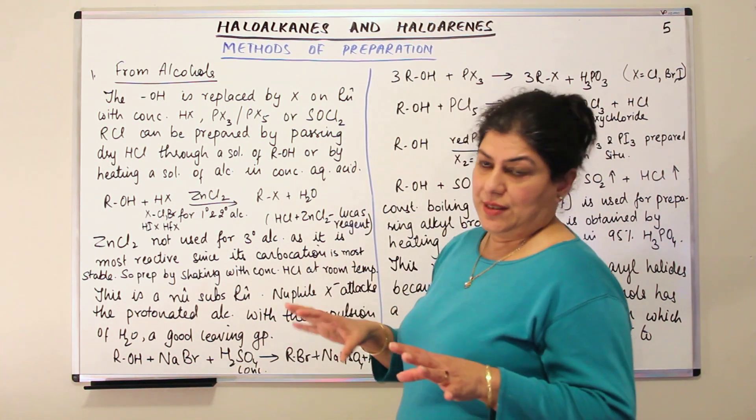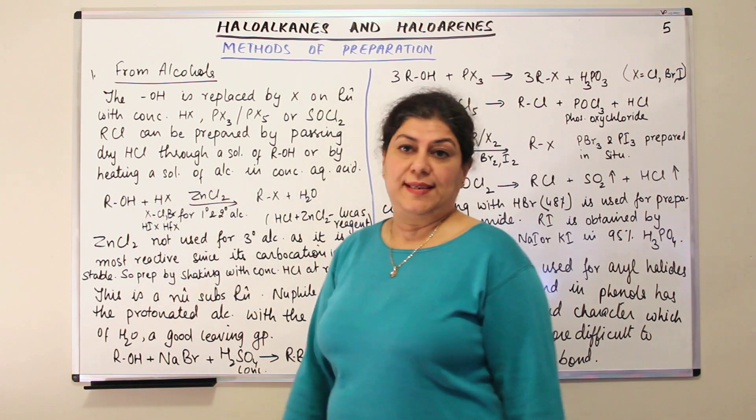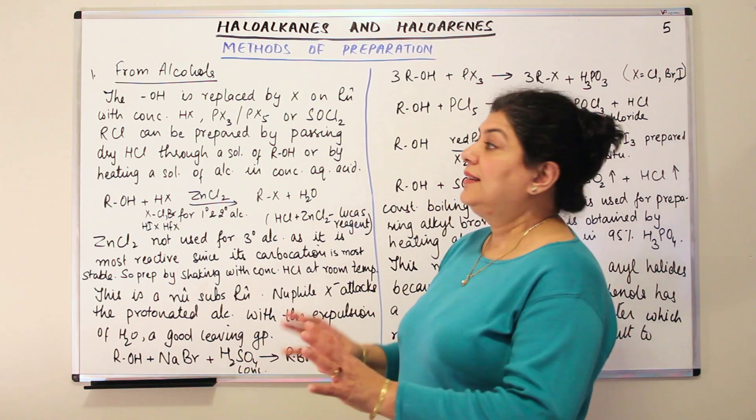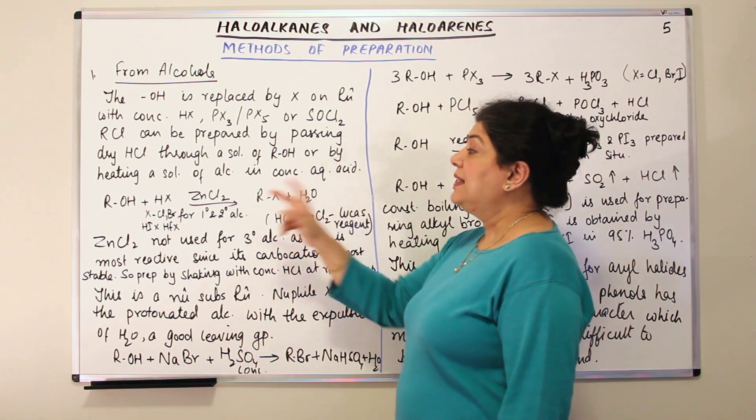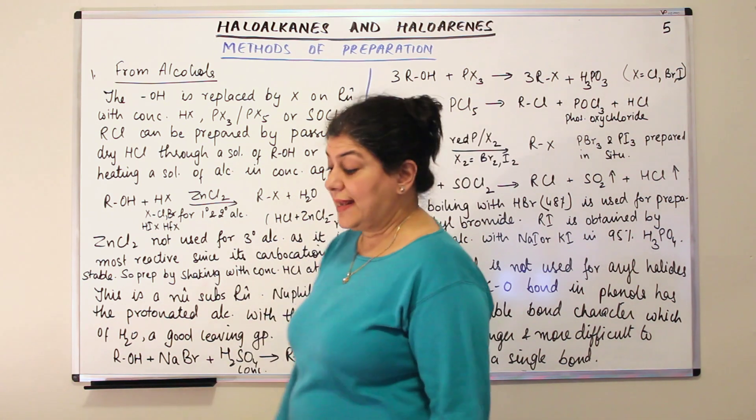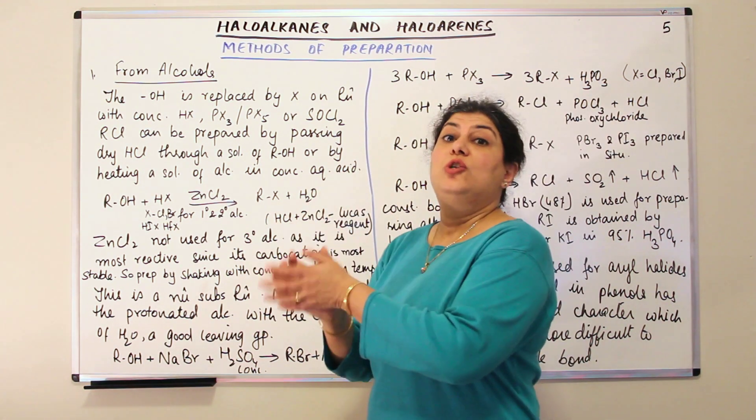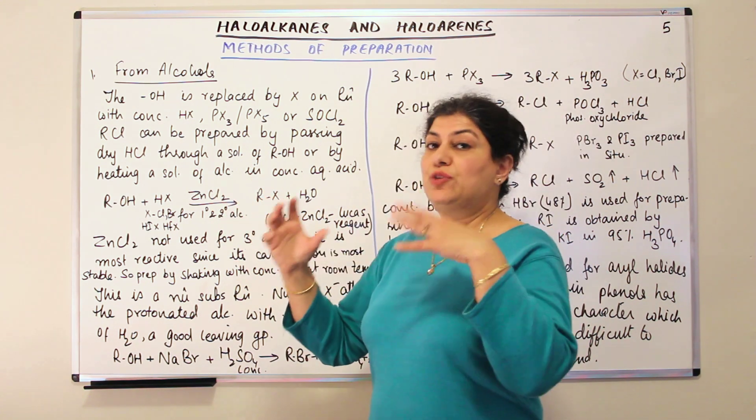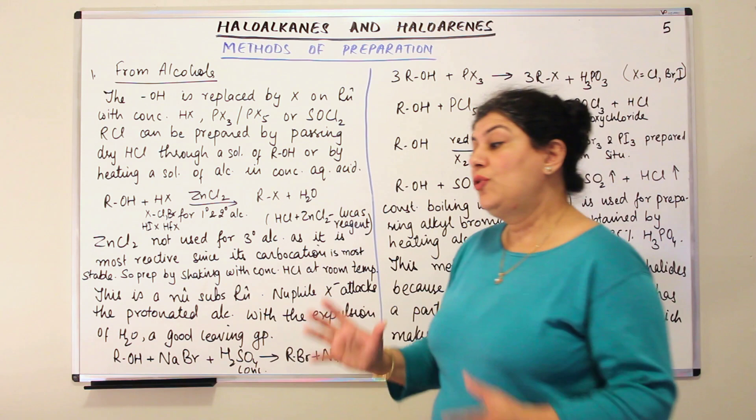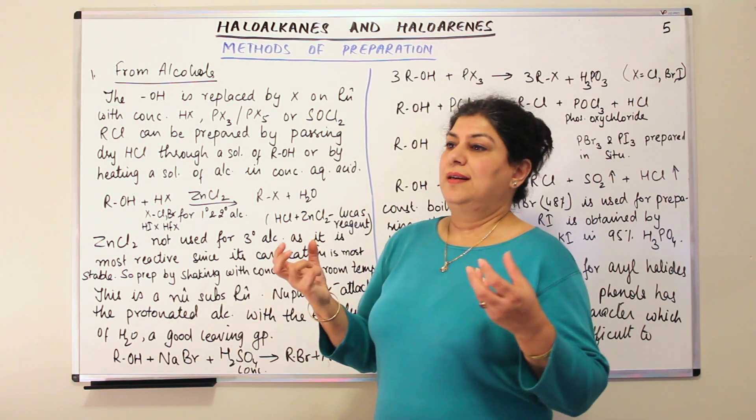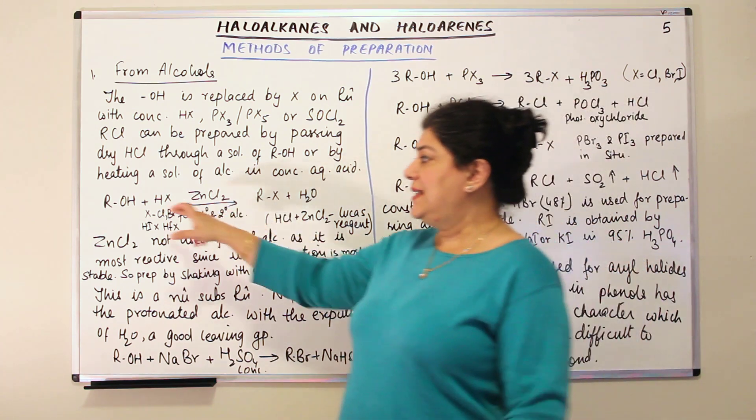So let us first understand the first technique that is the preparation of haloalkane from alcohol with the help of an acid. And this acid is a halogen acid. So it can be prepared by passing dry HCl through a solution of alcohol or by heating a solution of alcohol in concentrated aqueous acid. You know when hydrochloric acid is very reactive but if the alcohol is also very reactive you can just pass dry HCl through it which would be very reactive and therefore it would be a quick immediate reaction. But when you do not have an alcohol which is as reactive you need a kind of a catalyst which helps you to carry out the substitution. This is as you can see it is a substitution reaction.